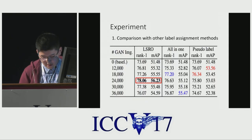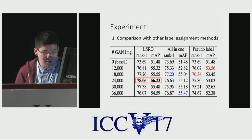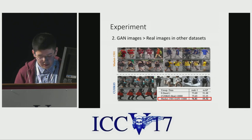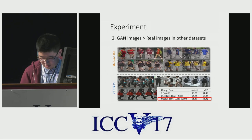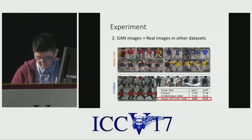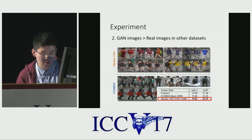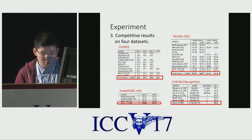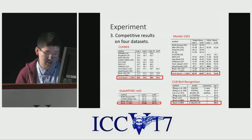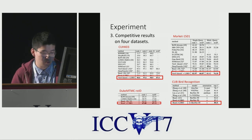In the experiments, we compare with several label assignment methods and show our method LSRO performs well. We also compare results using real images from other datasets to regularize the CNN, and we observe that real data also helps regularization, but the model trained by GAN is slightly better. Our method achieves competitive results on four datasets: three person Re-ID datasets and one fine-grained dataset.